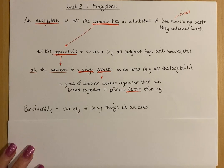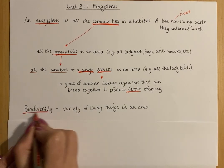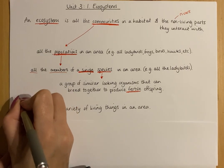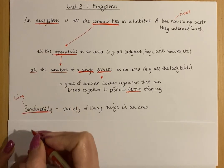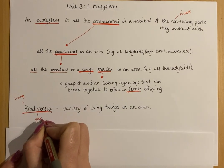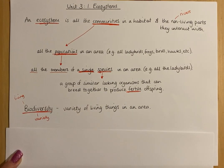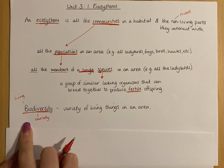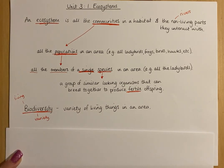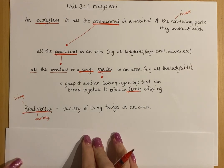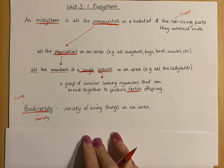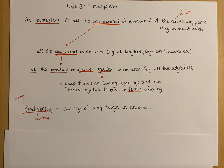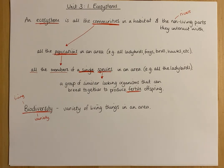Another definition you need to know is biodiversity. Bio means living, and diversity means variety, so biodiversity means the variety of living things in an area. The more biodiverse an area is, the more variety it has — which is better. If you just had one species living in an area, that's no use. You need a whole bunch of interlinked communities and interlinked populations.